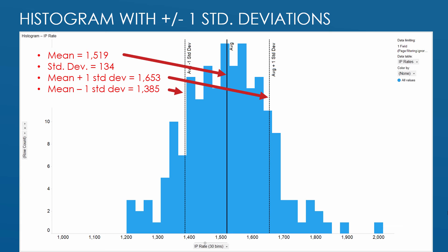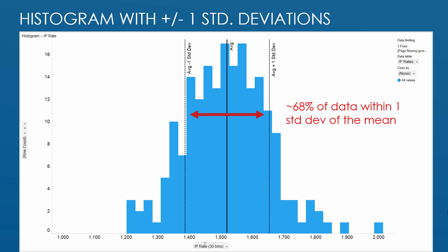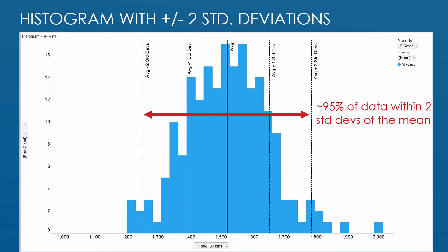For most data that's normally distributed, about 68% of the data is within one standard deviation of the mean, and about 95% of the data is within two standard deviations of the mean.